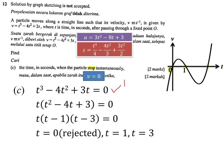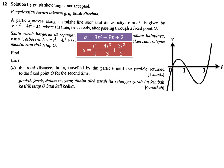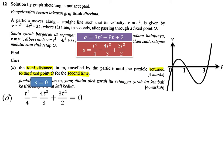Next part: find the total distance traveled by the particle until it returns to the fixed point O for the second time. Total distance means finding the total area under the velocity graph. The concept applied when the particle returns to fixed point O is that displacement equals zero, so we set the displacement equation equal to zero.